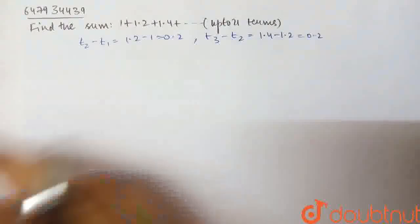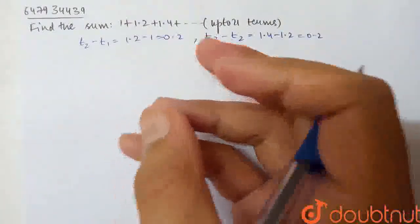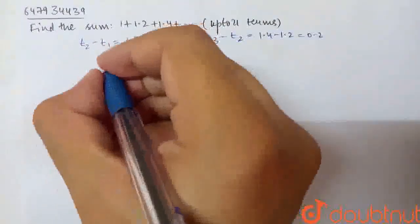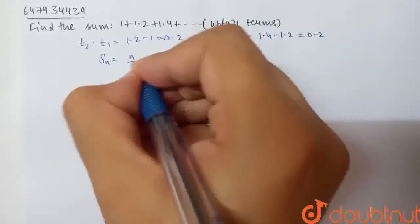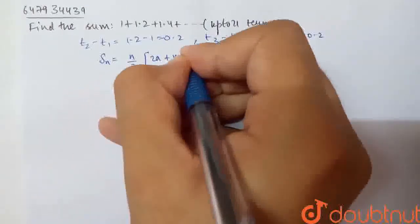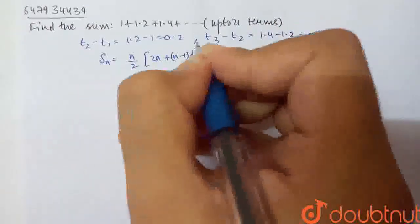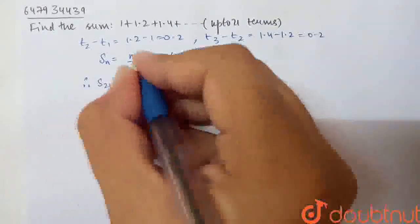Hence, the difference between two consecutive terms is the same. That is the common difference. Hence, it's an AP. The sum of n terms of an AP is n/2 × [2a + (n-1)d]. This is the sum of n terms formula. Therefore, S21...